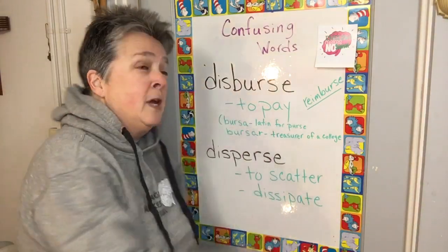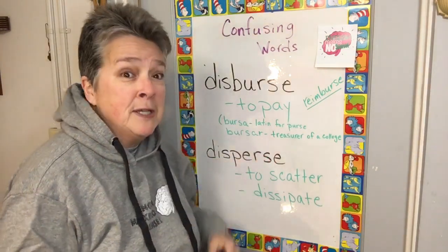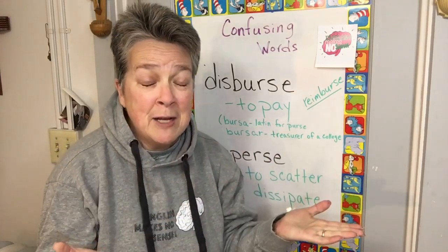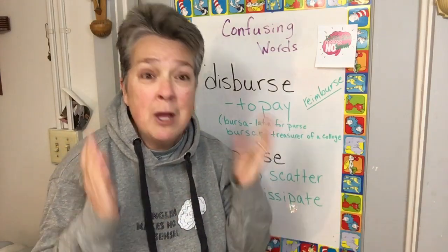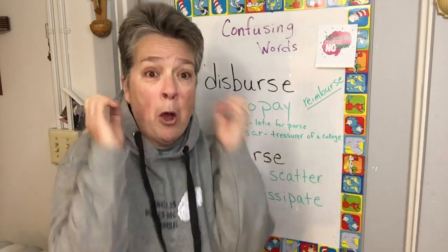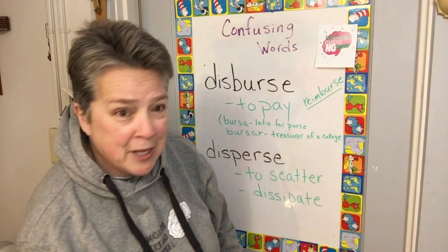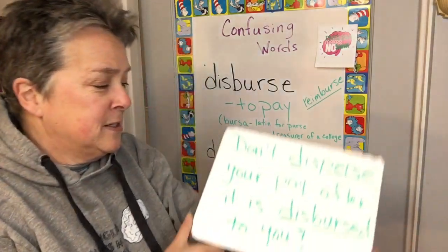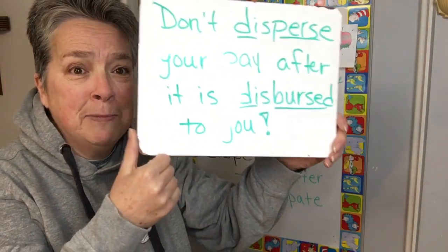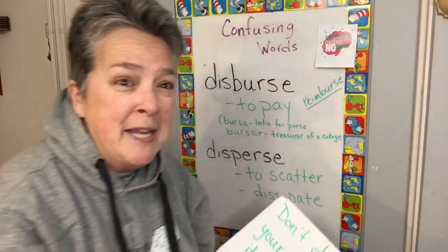D-I-S-P-E-R-S-E has to do with money — wait, disperse with the P has to do with scattering. Why do they sound so similar and are so confusing? I don't know, because English — it just does these things. But now you can read and understand this sentence: Don't disperse your pay after it's disbursed to you. Come on, English.